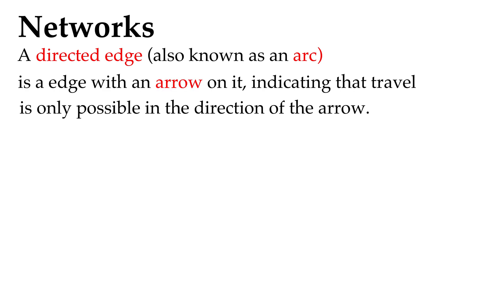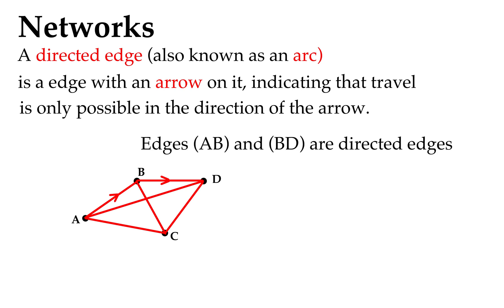A directed edge, also known as an arc, has an arrow on it indicating that travel is only possible in the direction of the arrow. In this diagram, the edge AB has an arrow on it, and the edge BD has an arrow on it, so they're called directed edges, and you can see the direction of travel indicated by those arrows.